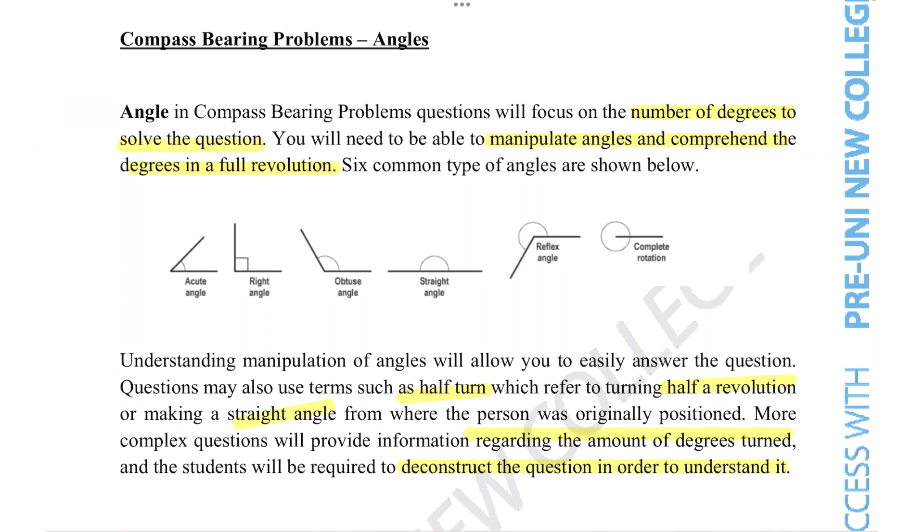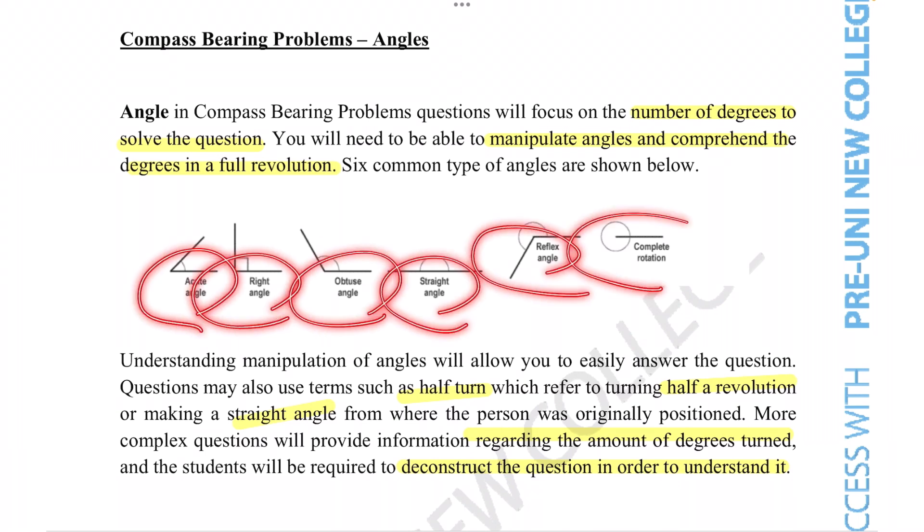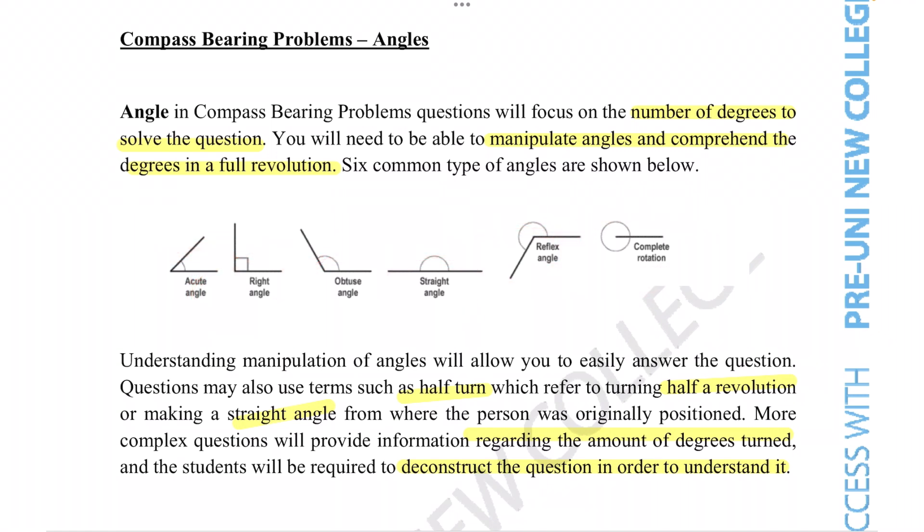We can label exactly how much they've turned by using these terms shown here. Depending on the amount of turning that the object or person does, they are given different specific names.